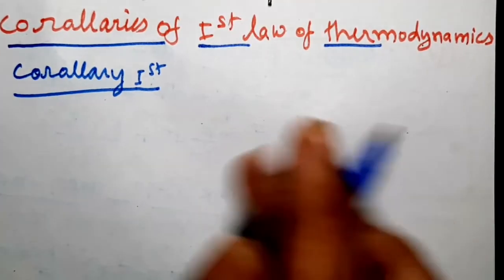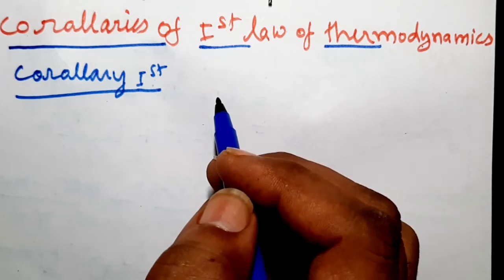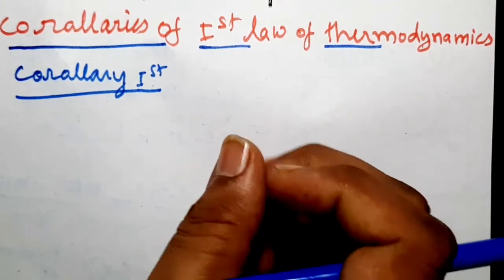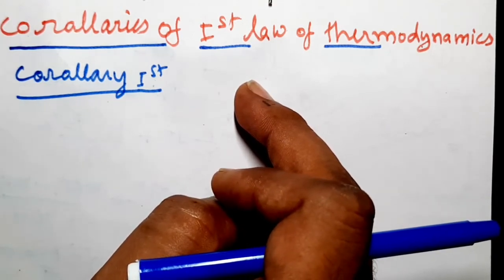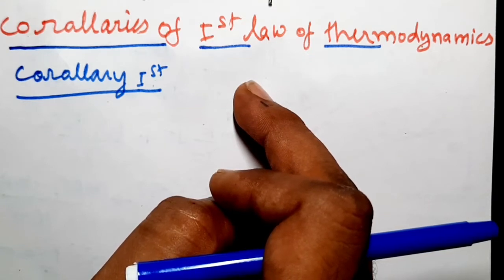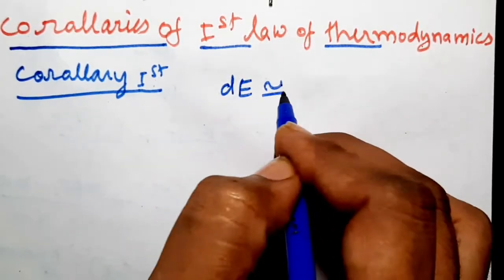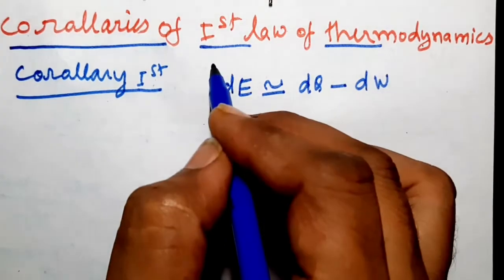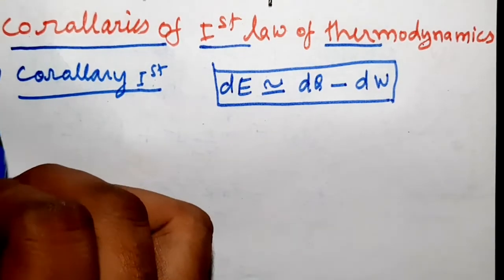The first corollary states that there exists a property of a closed system. The change in value of this property during the process is given by the difference between heat supplied and work done by the system. So dE is equivalent to dQ minus dW. This is the first corollary of the first law of thermodynamics.